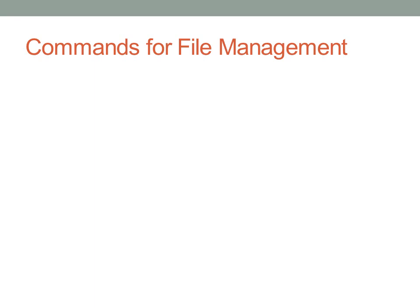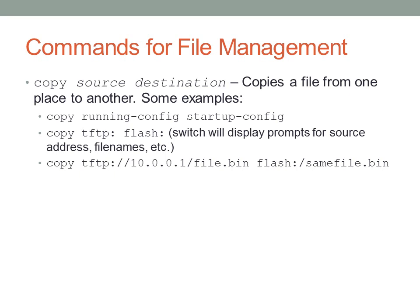Here are some basic file management commands for IOS. The 'copy' command is very important — it works much like on other operating systems: specify the source first, then the destination. For example, 'copy running-config startup-config' (copy run start) writes the running config to memory so changes aren't lost on reboot. 'Copy tftp: flash:' copies from an external TFTP server to onboard flash. If you omit IP addresses or filenames, the device prompts you for each piece of information needed.